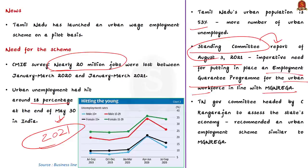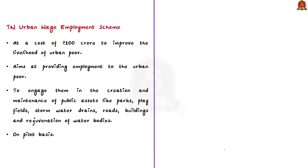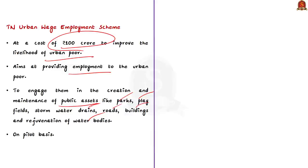Tamil Nadu constituted a committee headed by former RBI Governor C. Rangarajan to assess the state's economy. This committee recommended an urban employment scheme similar to NREGA. Tamil Nadu government will implement this urban employment scheme at a cost of 100 crores to improve the livelihood of urban poor. It will provide employment to unemployed urban poor people, who will be engaged in creating and maintaining public assets such as parks, play fields, drains, roads, buildings, and water bodies.